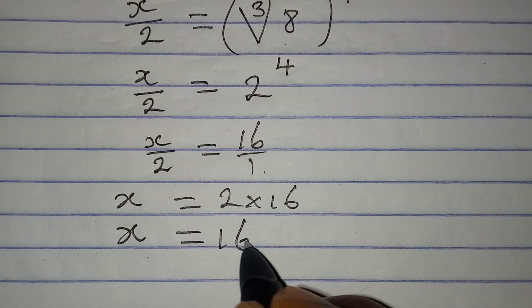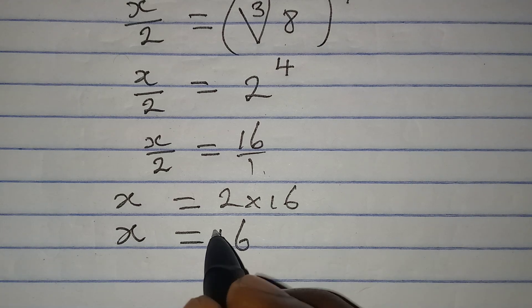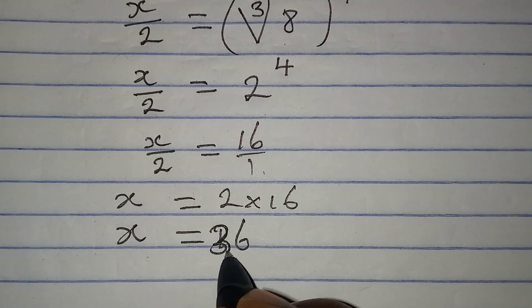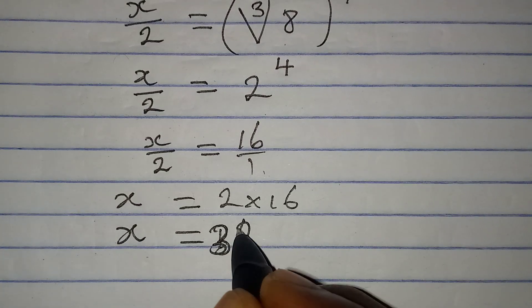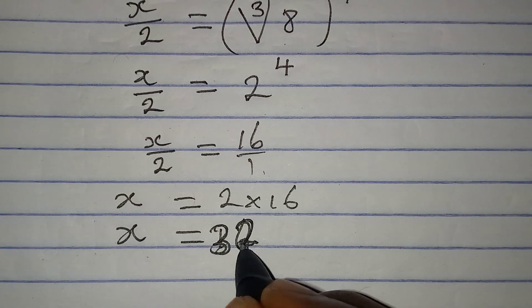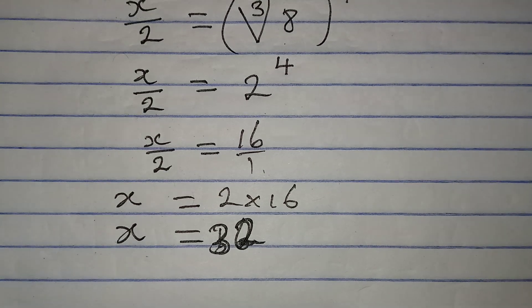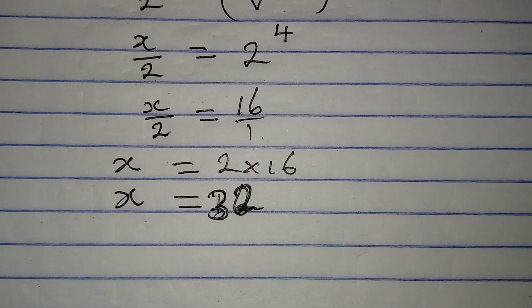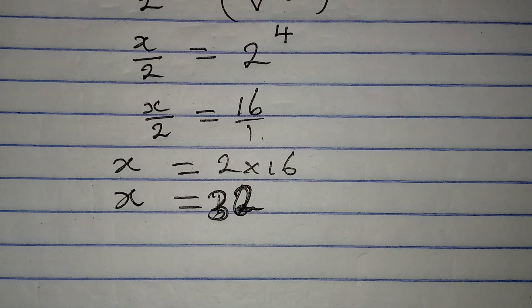From here, cross-multiplying: x times 1 equals 2 times 16, meaning the value of x is equal to 32.